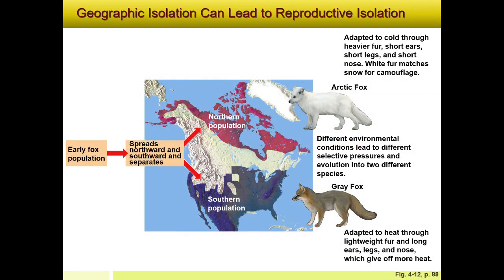Another example is the gray fox and the arctic fox — two different species. The early fox population existed, and some spread northward while others spread southward. They separated and had different adaptations in those different climates, causing certain traits to survive through mutations. Now these two species cannot mate — they are no longer the same species, even though they came from the same early fox population.